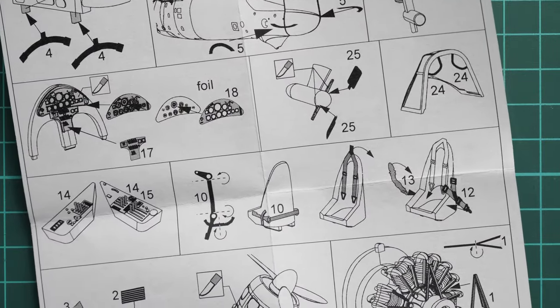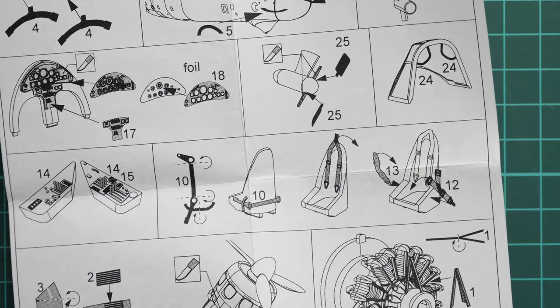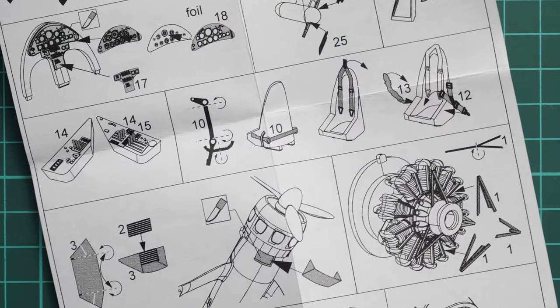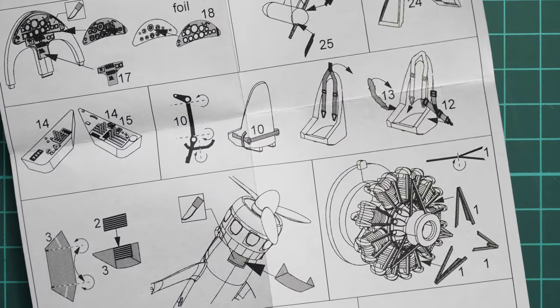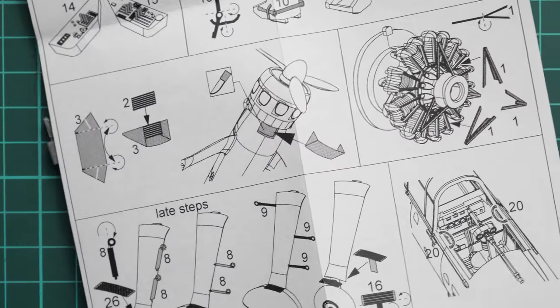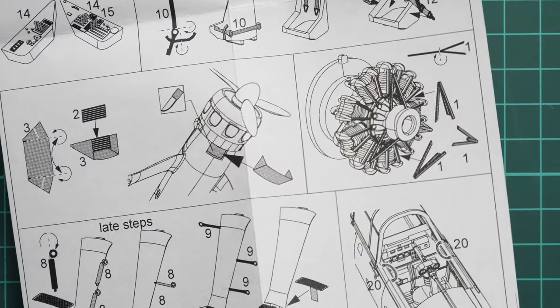Next we continue with handles on the canopy, also some minor features on the side consoles, and of course seat belts on the pilot seat.